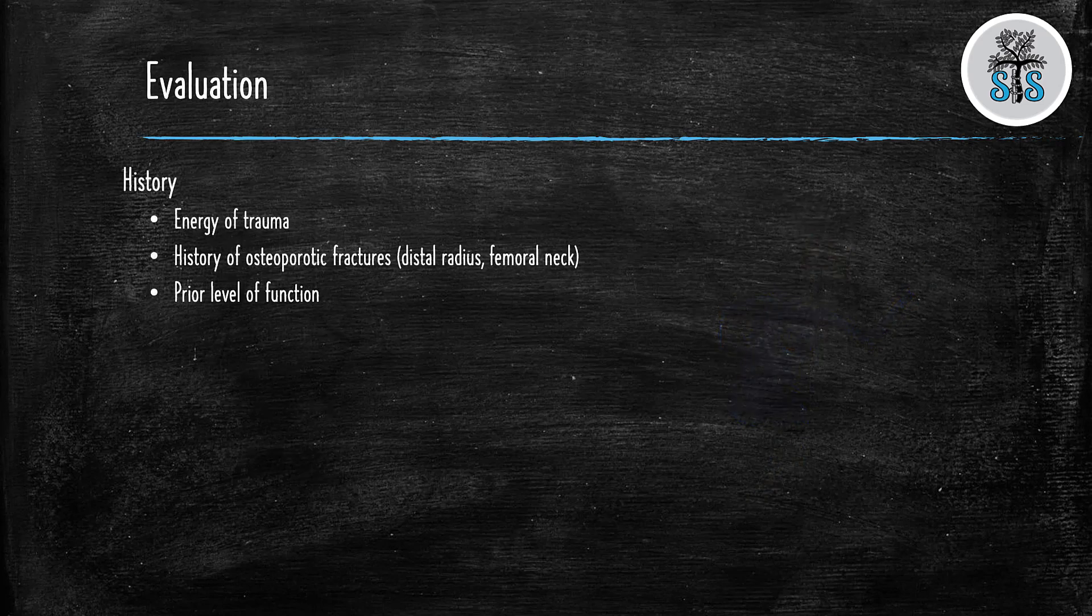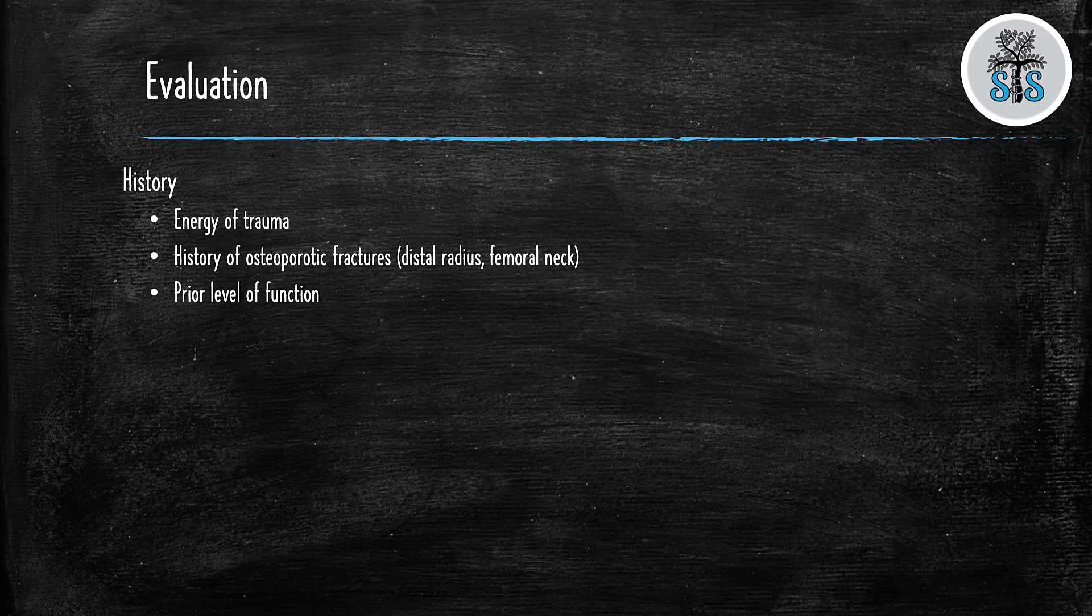When you're evaluating the patient in the emergency department, it's very important that you get a good, thorough history. There are certain aspects of the patient's history that are very important to ascertain when gathering their history. First is the energy of the trauma, because a ground-level fall versus falling off the roof are two totally different management pathways. You should also ask about any other fractures that happened in the past, such as distal radius or femoral neck fractures, because this could clue you into that the patient may have osteoporosis. One of the last things is the patient's prior level of function before this injury. Did they ever have pain in their shoulder before? Have they had arthritis in their shoulder? Have they had rotator cuff issues that hinder their ability to use their arm? All of these questions are important because it could dictate which treatment option you're going to lean towards in the end.